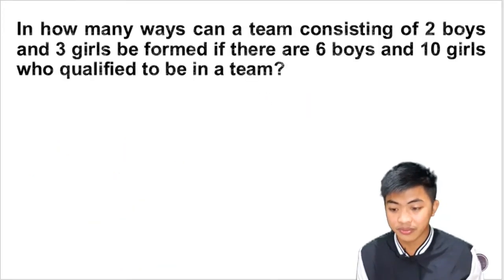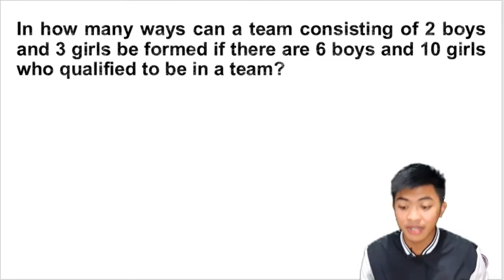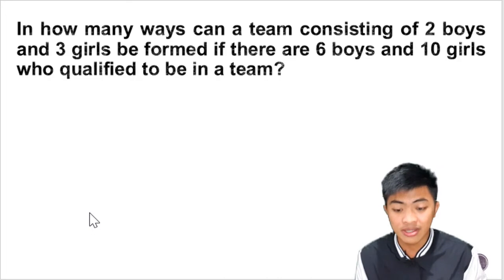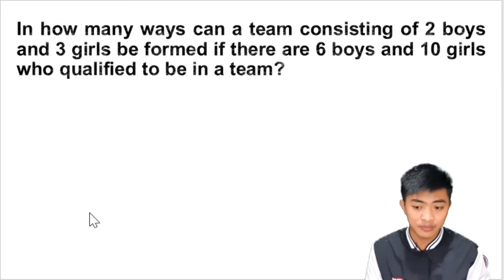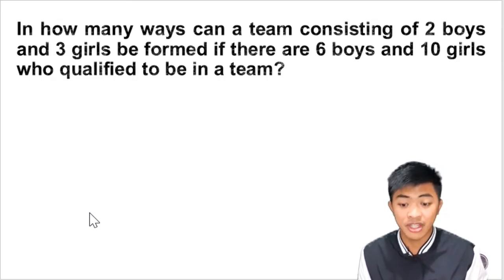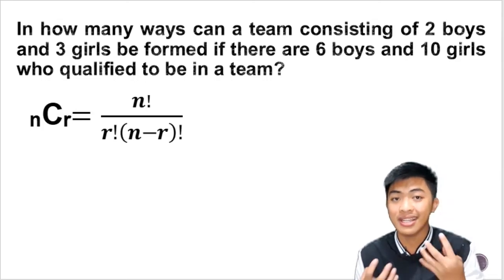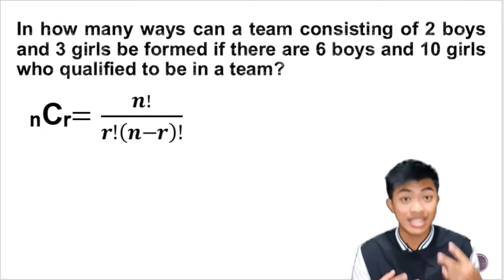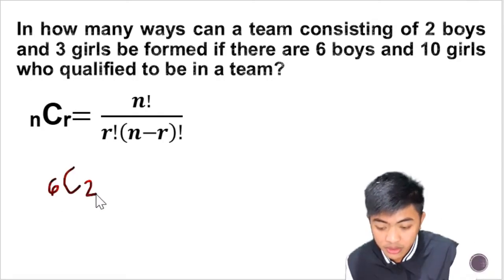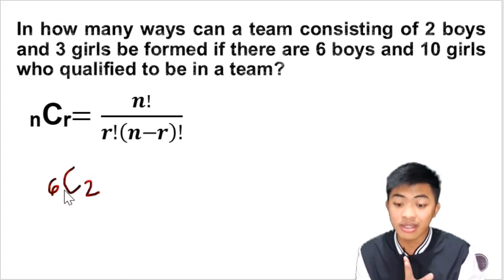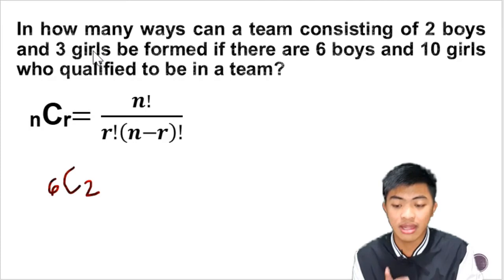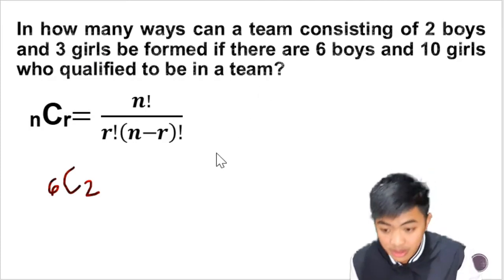Let's have another one. This one here is a little bit complicated. In how many ways can a team consisting of two boys and three girls be formed if there are six boys and ten girls who qualified to be in a team? We can divide the problem in two parts. The first part is selecting two boys from six boys. The second part is selecting three girls from ten girls.